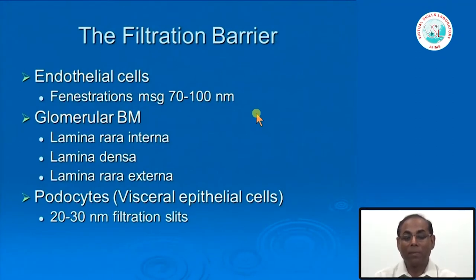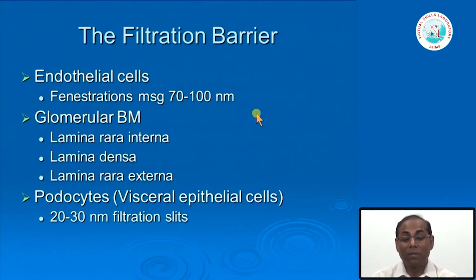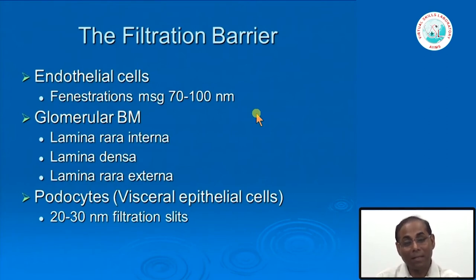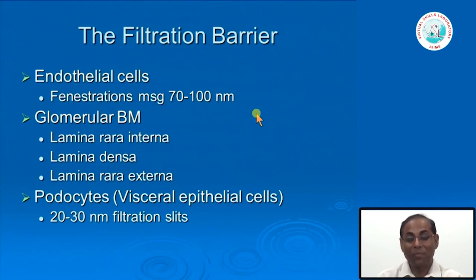To summarize the filtration barrier: it consists of endothelial cells with fenestrations of 70 to 100 nanometers, followed by a continuous glomerular basement membrane. Under electron microscopy, the GBM has a sub-endothelial rarefied area called the lamina rara interna, a middle dense area called the lamina densa, and an external rarefied area near the podocyte foot processes called the lamina rara externa.